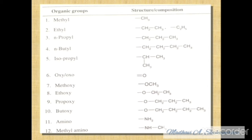Organic groups with their structure and composition. There are some organic groups like: methyl CH3, ethyl C2H5, n-propyl, n-butyl, isopropyl, oxy and oxo (double bond O), methoxy OCH3, ethoxy OC2H5, propoxy, butoxy, amino, methylamino. Chemistry: methane, ethyl, propane, butane (4 carbon), pentane (5 carbon), hexane, heptane, octane, nonane and decane.